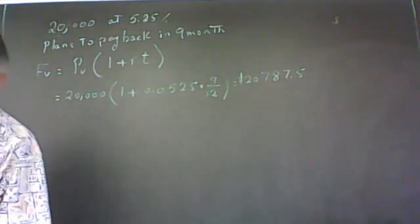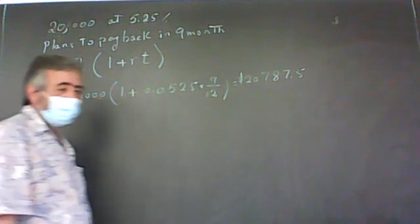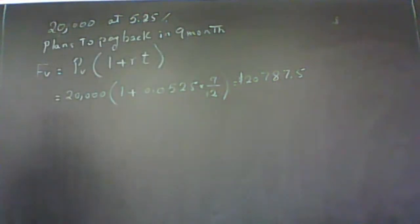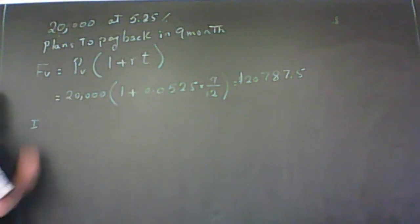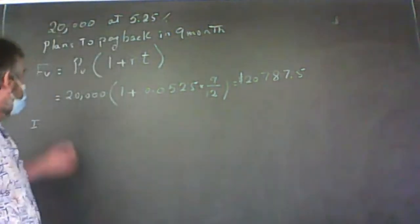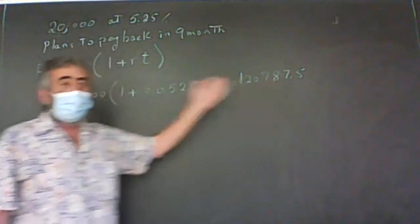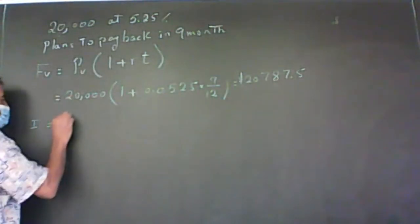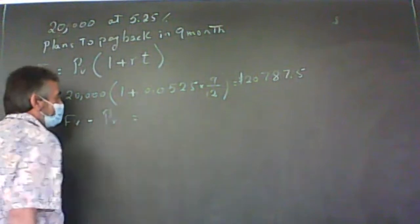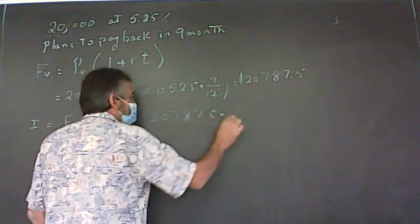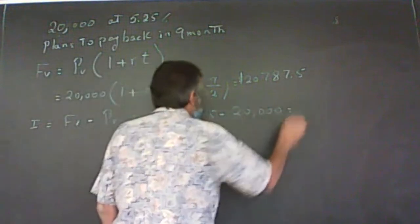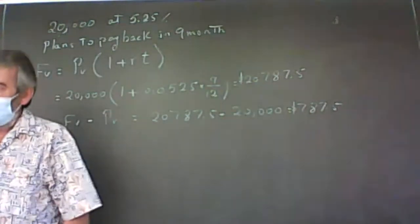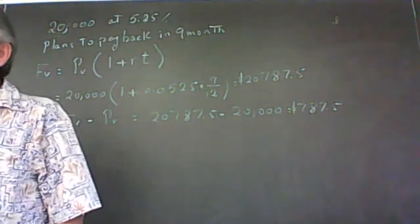So he's going to pay back $20,787.50. To find the interest paid, the easy way is: we already know the future value and how much he borrowed. The difference between the two is simply the interest. So I = FV − PV = $20,787.50 − $20,000, which gives $787.50. He pays $787.50 in interest.